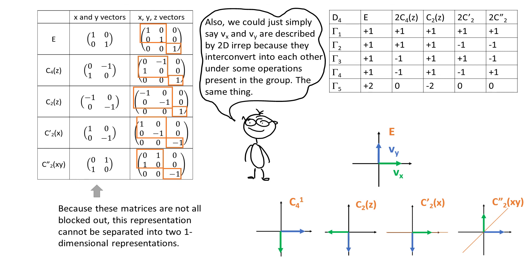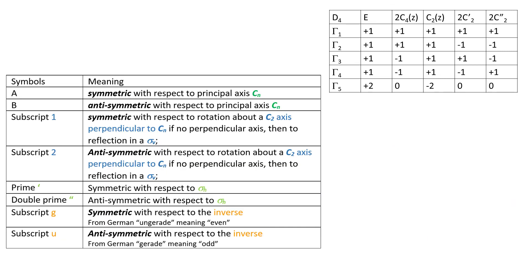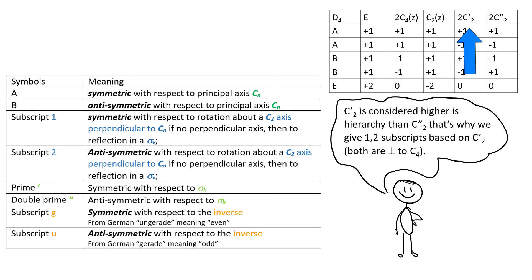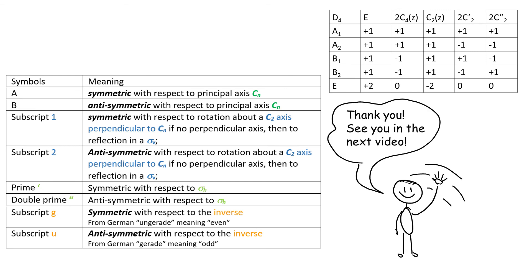The very last thing that I want to point out is that we could give these EREPs names according to the rules from the last video. The first four entries will be A's or B's and the last will be E. A's are symmetric under C4, B's are anti-symmetric under C4. Then we need to distinguish between the two A's and the two B's. So we look under C2' plus 1 gets subscript 1 and minus 1 gets subscript 2. So that's all I have for you today. I hope it helps. Thank you for watching. Bye!